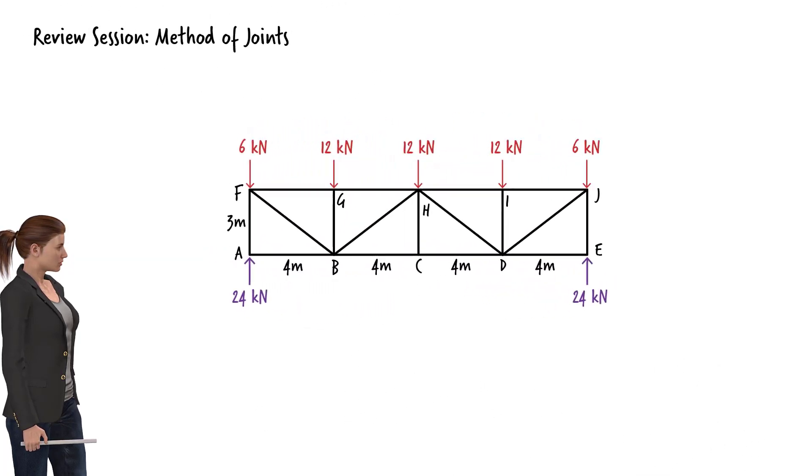Before we go any further, let's calculate the angle associated with the diagonal truss members. Tangent of this angle equals 3 over 4. So the angle is 36.87 degrees.